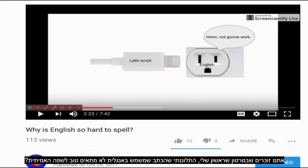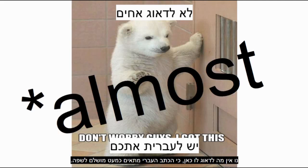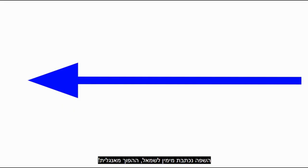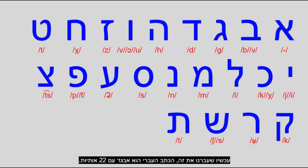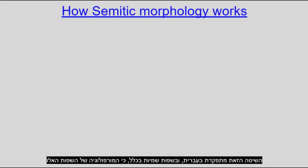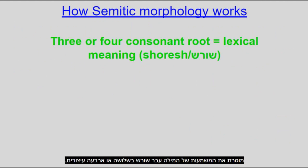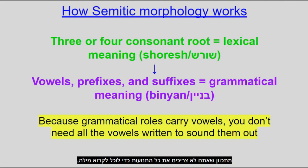That brings us to the script. Remember how English's script doesn't fit the language well? There's nothing to worry about here because the Hebrew script fits the language almost perfectly — but first, an important note: the language is written right to left, the opposite of English. The Hebrew script is an abjad with 22 letters. An abjad is a writing system with only consonants, mostly — but more on that later. The system works for Hebrew and Semitic languages overall, as the morphology conveys the meaning through a root of 3 or 4 consonants called the shoresh, while grammar is carried by the vowels and sometimes other consonants known as the pattern or binyan. This means you don't need all the vowels to read a word if you know the context and Hebrew grammar.